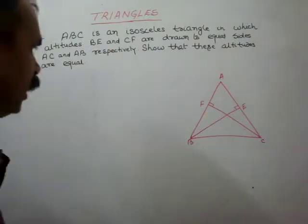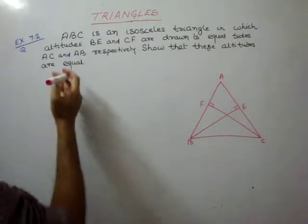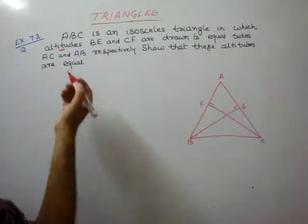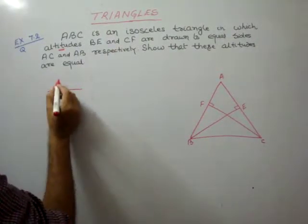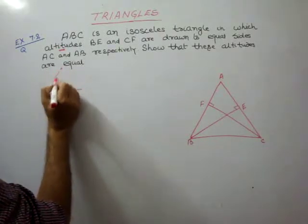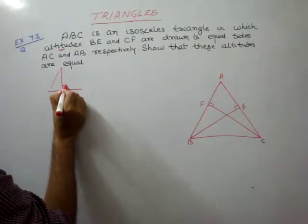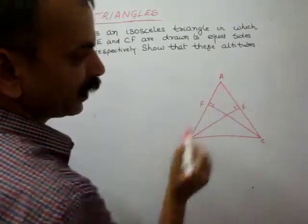So first we need to know what is an altitude? Altitude means height. So how do we measure height? Suppose this is our ground and we are standing here, so height is not measured slanted — height is measured as perpendicular. That means it makes a 90-degree angle. So here we have made a 90-degree angle.